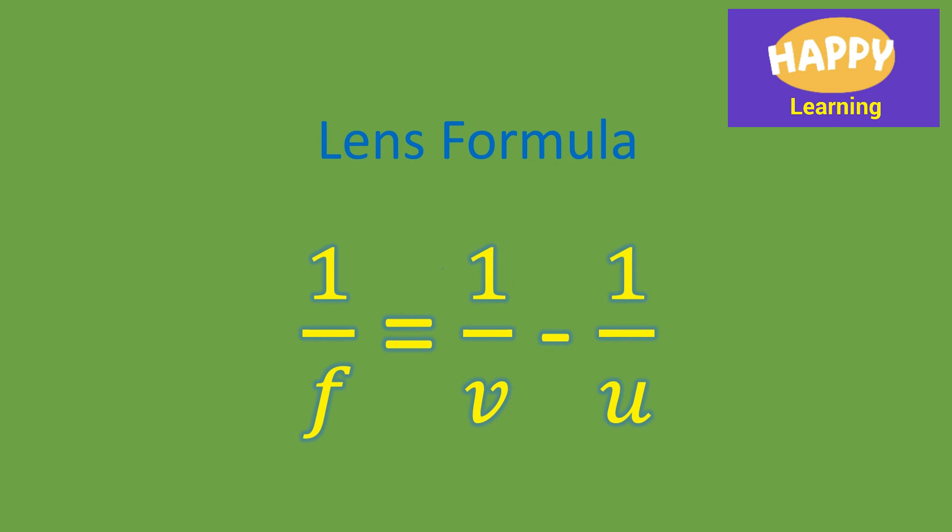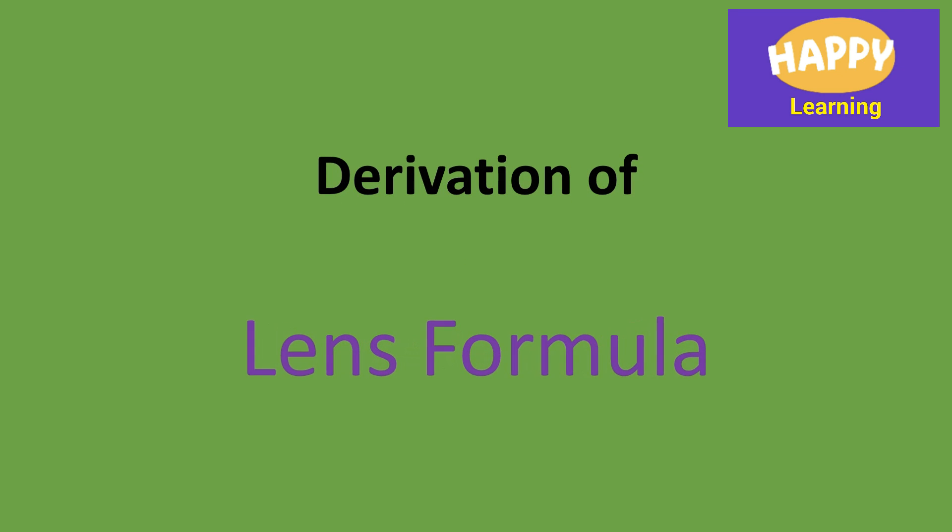So, lens formula is 1 by F is equal to 1 by V minus 1 by U. Now, let us derive the lens formula.